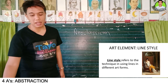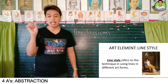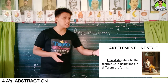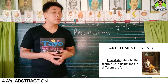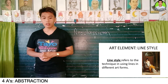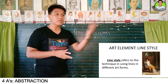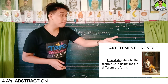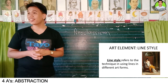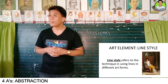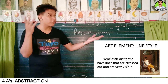Now the third element is line style. It refers to the technique in using lines in different art forms. You can see it in paintings and in sculptures. What do you think is the line style used in the art forms from the neoclassic period? Based on your observations, the lines are very visible and stressed out. What else? The lines are very well defined. You can see them from afar.